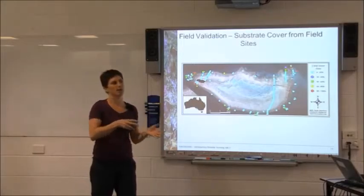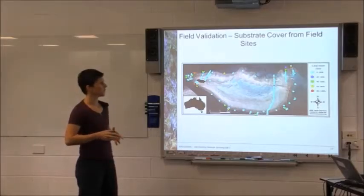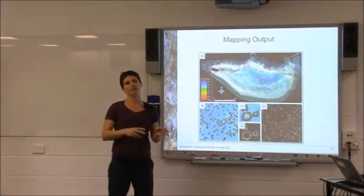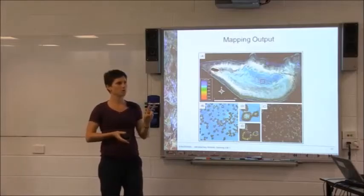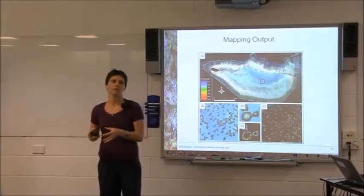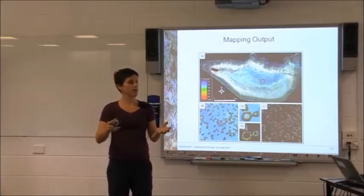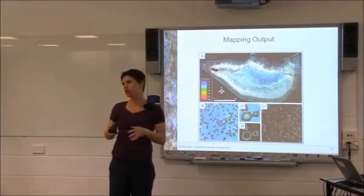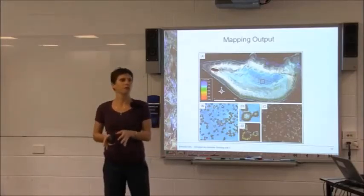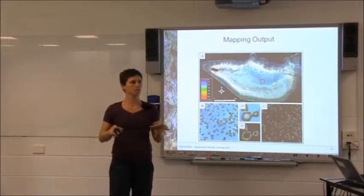What we really want to do is translate that field data to image data, using a bunch of different modelling techniques. Really what I want to show is how you use field data to either calibrate or validate your mapping product. When you calibrate something, you're using your field data to create some sort of model or map. When you validate it, you're testing the accuracy of your product at the end. Usually what we do when we go out in the field is take double the amount of field data we need: half to calibrate our models, and half to validate. We want those to be independent, randomly selected samples.